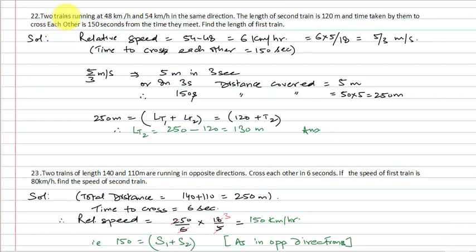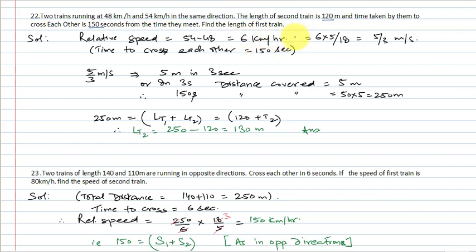Question number 22: Two trains running at 48 km per hour and 54 km per hour in the same direction — the length of the second train is 120 meters and the time taken to cross each other is 150 seconds from when they meet. Find the length of the first train. Relative speed = 54 − 48 = 6 km per hour, converted to meters per second = 5/3 m/s.